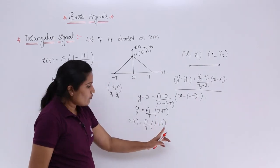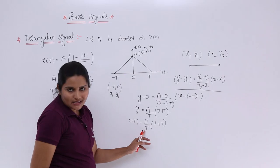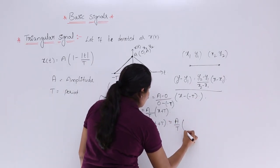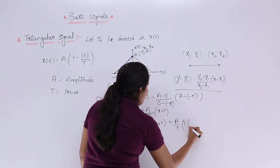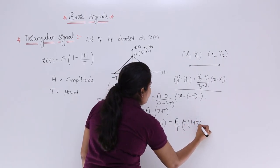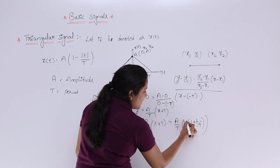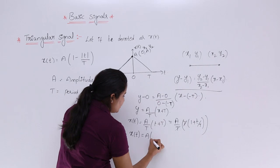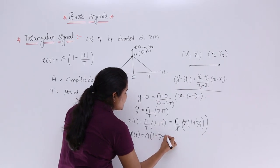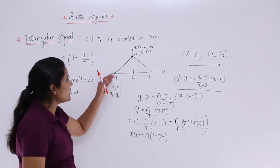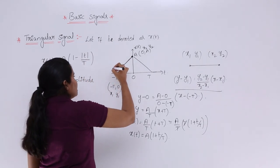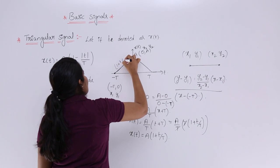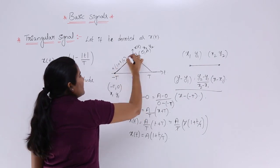Taking T as a common factor from (t + T), we get x(t) = A · (1 + t/T). So the left-side line equation is x(t) = A · (1 + t/T).